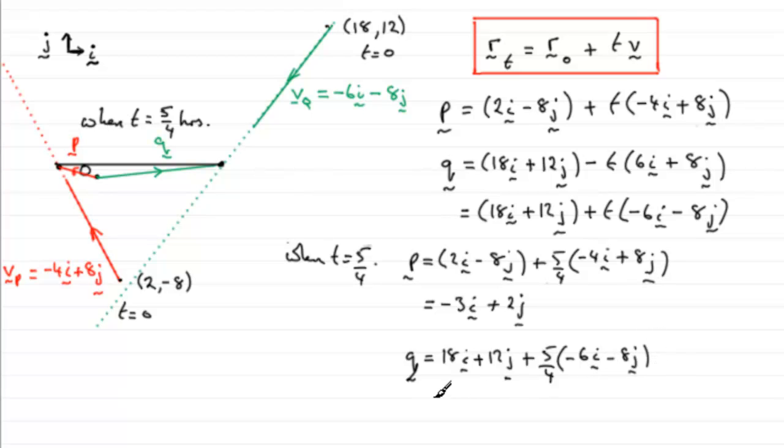And if you work that one out, for the I components, 18 plus five upon four times minus 6, we end up with 10.5I. And for the J components, we've got this value here, 12 and then plus five upon four times minus 8. That comes out to be 2 in the J direction.